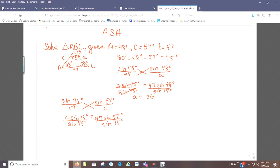And then, let our calculator do the work to figure out what this is. So, 47 sine of 57 degrees divided by sine of 75 degrees. My calculator, if I round this to the nearest whole value, tells me that's approximately 41.